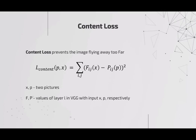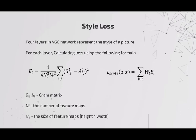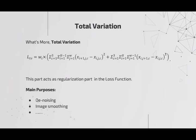Second is style loss. Compared to content loss, it is more involved. Again, we feed the transformed image and style image into the VGG network, but this time we use intermediate layers. For each intermediate layer, we take the gram matrix first, then take the difference. We then sum these as a weighted sum across four layers — this is the style loss. After experimentation, we found the output had a lot of noise, so we added total variation as a regularization term. Its main purpose is to smooth the image and reduce noise. These three terms combine to form our full loss function.